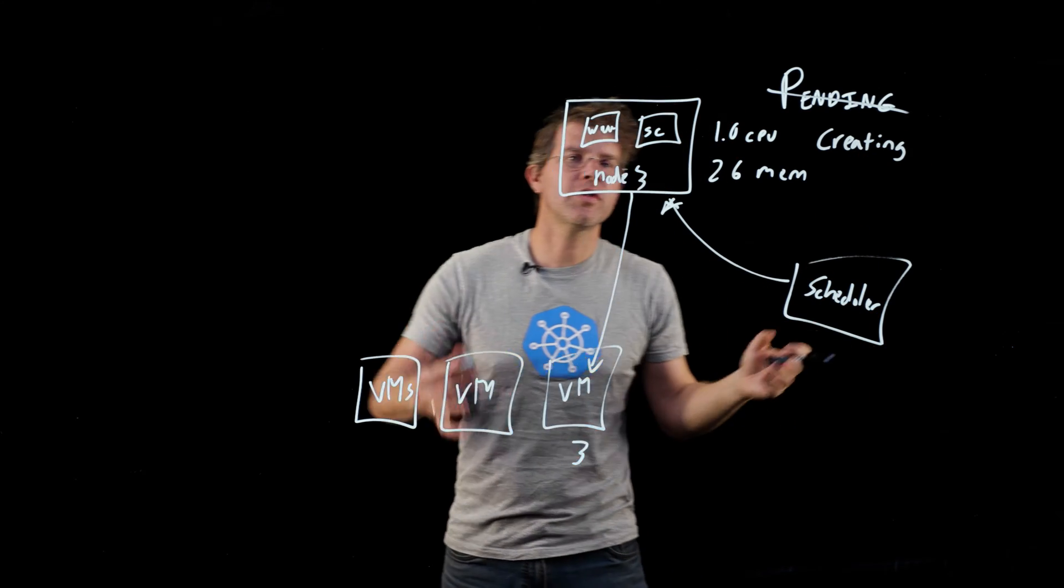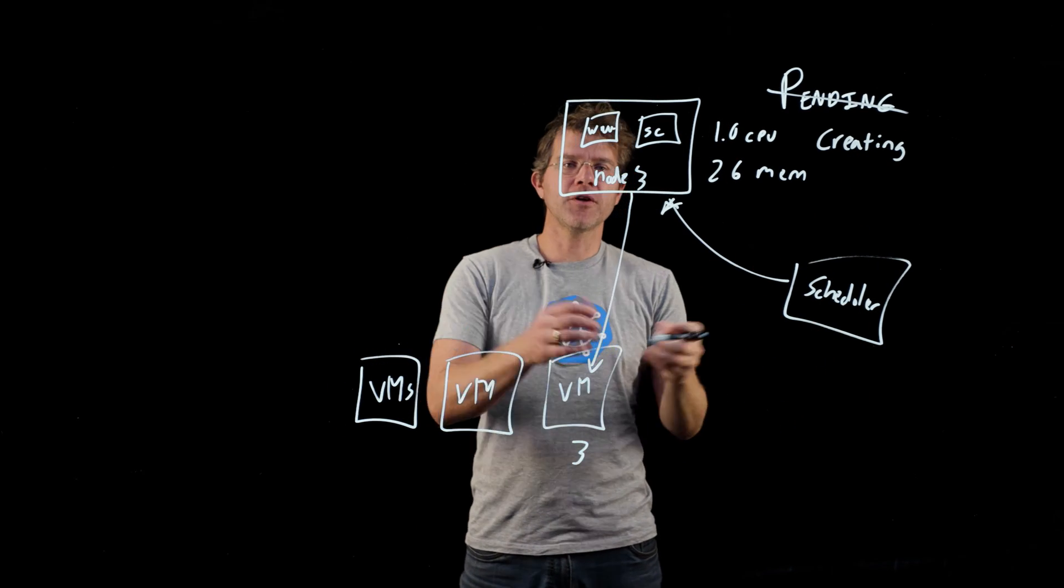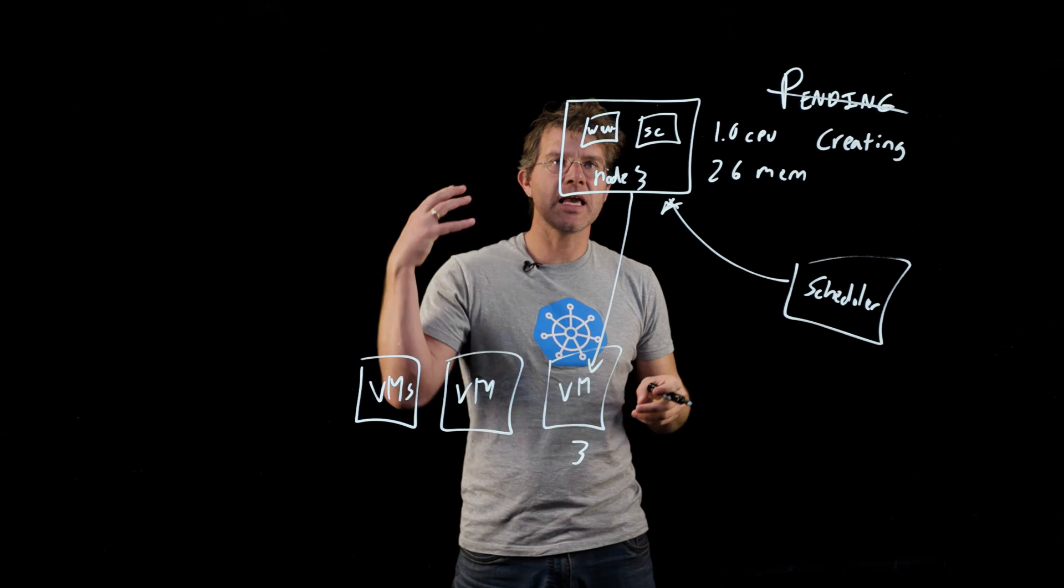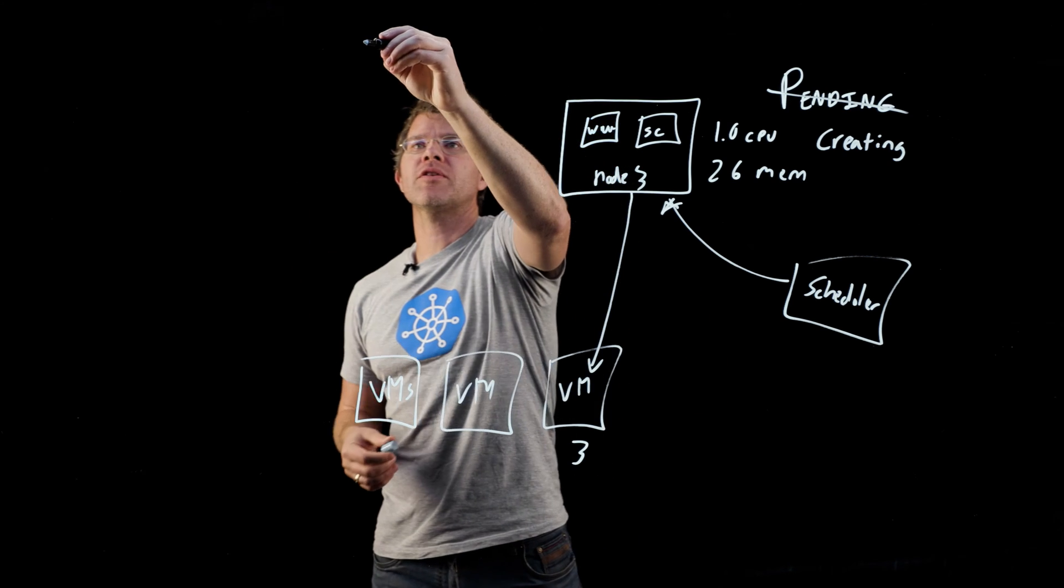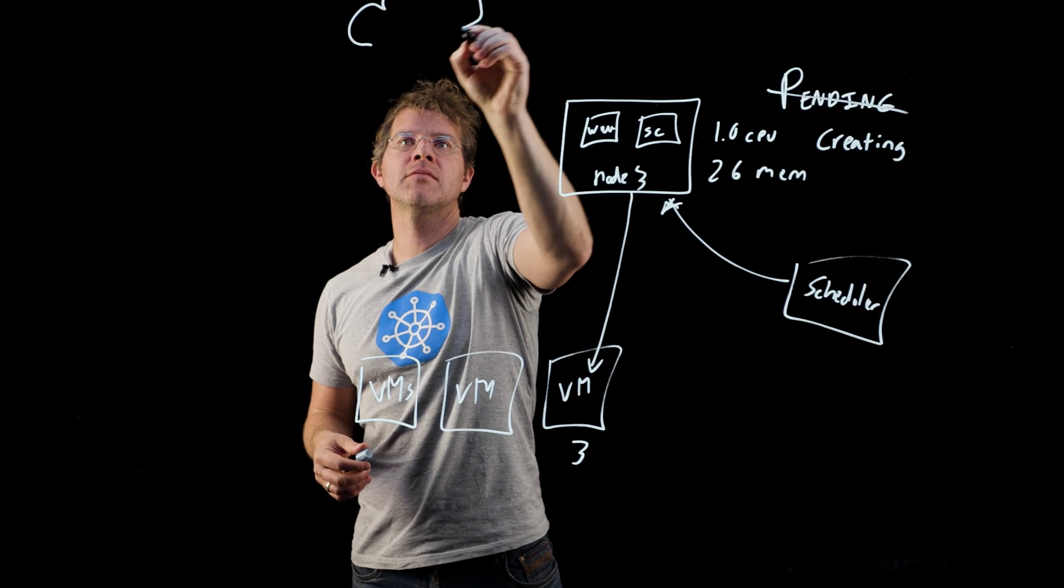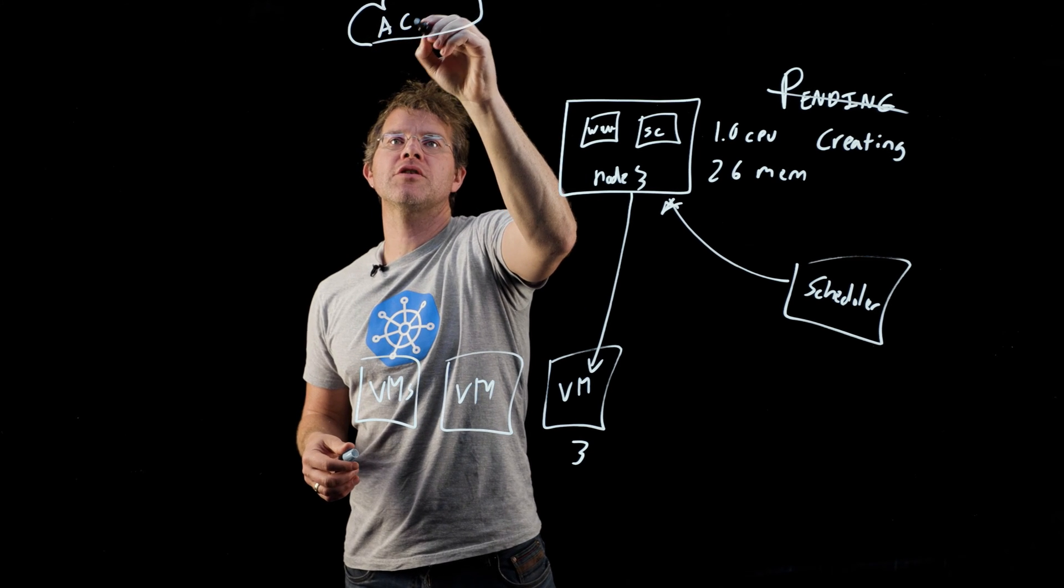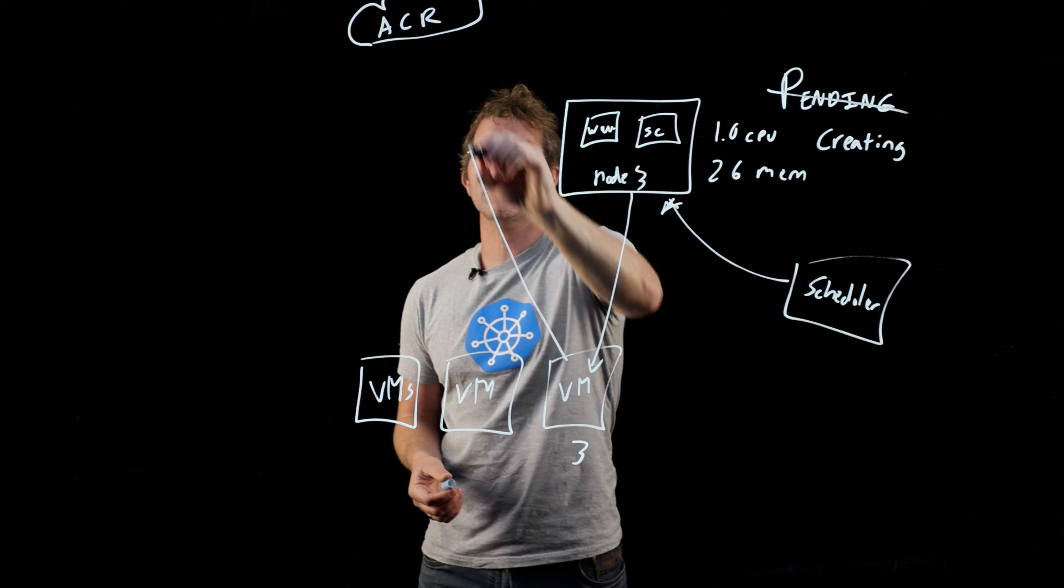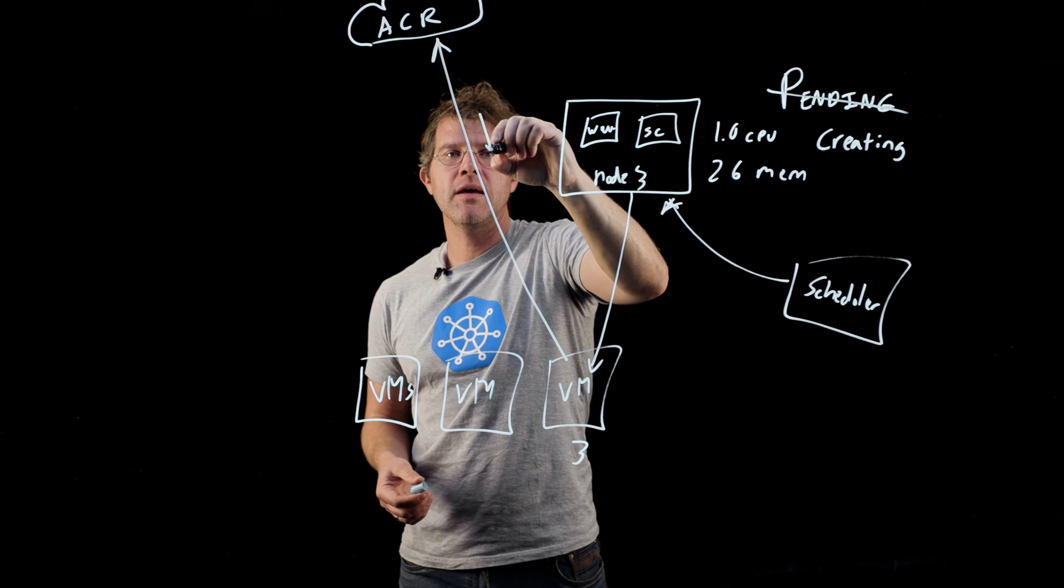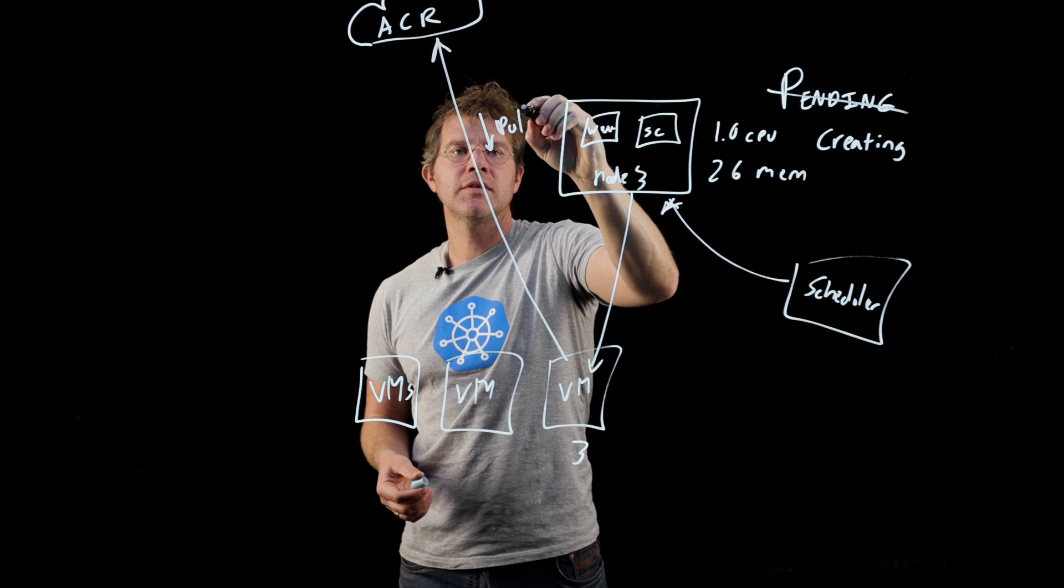Now, what's going on with the creating state? Well, the first thing that's happening is obviously the image needs to be pulled. Now, the image is in some sort of cloud-based repository. Maybe it's in the Azure Container Registry. And so what's happening is the node itself is going out to the Azure Container Registry and pulling the image down to the node.